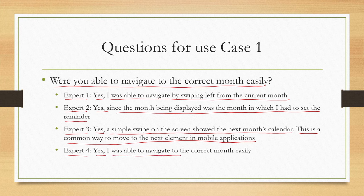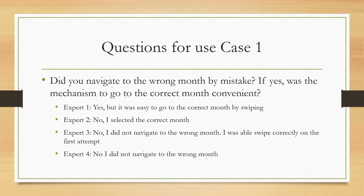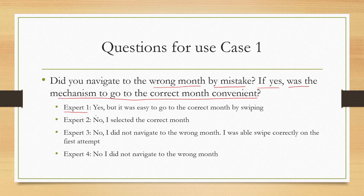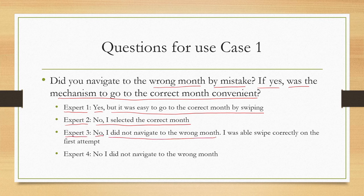Next question: did you navigate to the wrong month by mistake, and if so, was recovery convenient? Expert 1 said yes but it was easy to correct by swiping. Experts 2, 3, and 4 all said no — they did not navigate to the wrong month. So Expert 1 made a minor error but recovered easily.